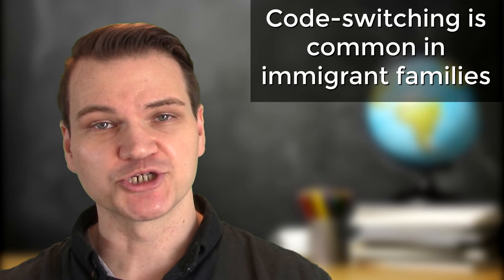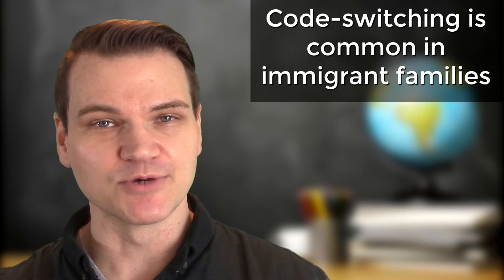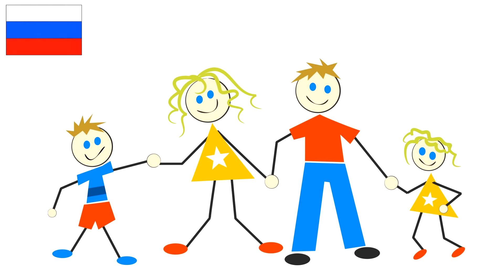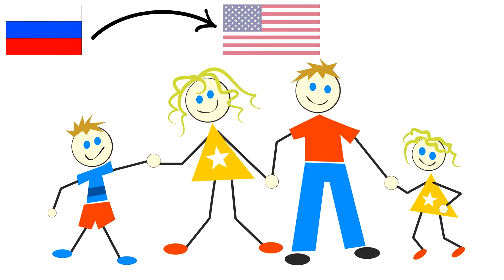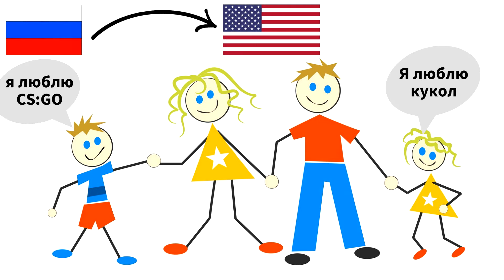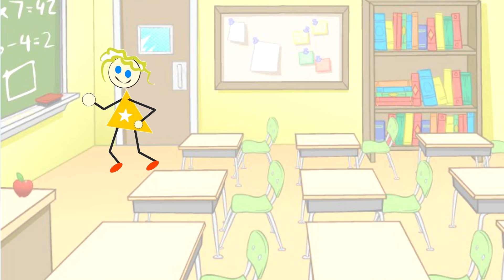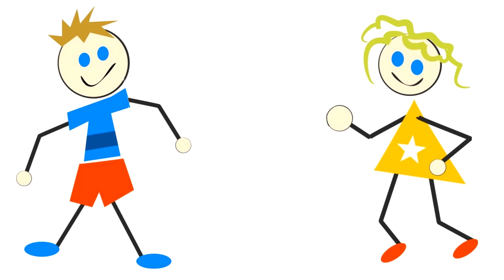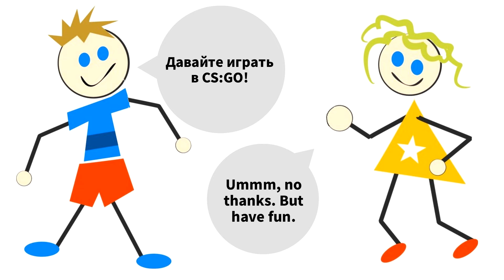One situation in which code switching is common is within immigrant families. For example, let's imagine a Russian family moves from Russia to the United States and the children grow up speaking Russian as their native language, but they learn English outside of the home. When the children in that family speak to their siblings, they might code switch between Russian and English.